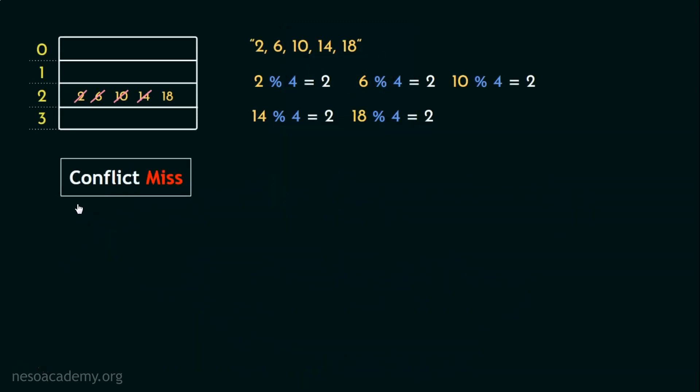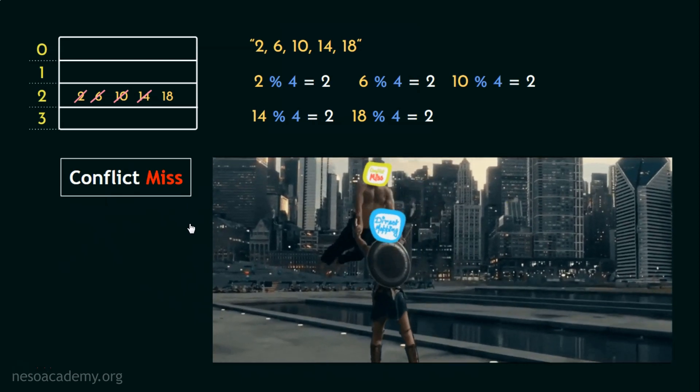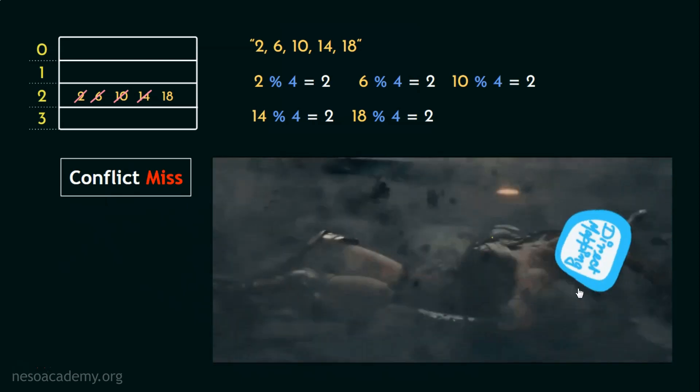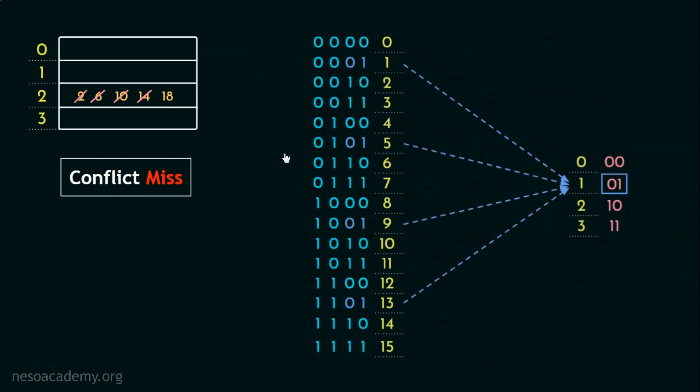We have already seen how conflict miss became an inevitable problem for the last memory mapping technique. To be fair, it basically just knocked out direct memory mapping and that happened due to the assignment of multiple main memory blocks to single cache lines.